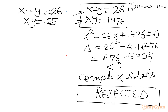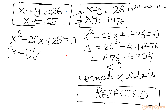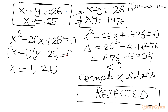Now for the first system with xy = 25: the quadratic is x² - 26x + 25 = 0, which factors as (x - 1)(x - 25) = 0. So we get two candidate solutions: x = 1 and x = 25.